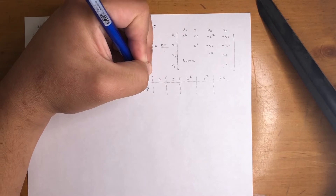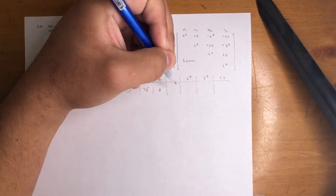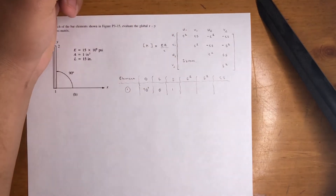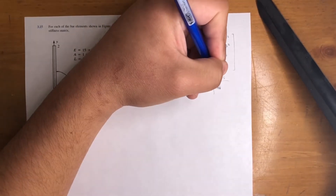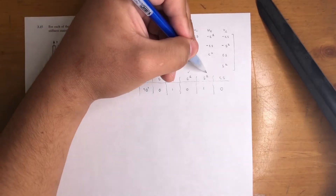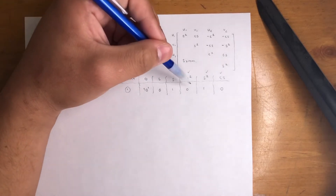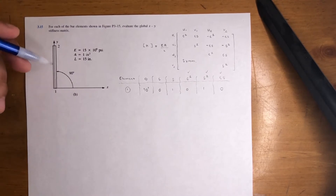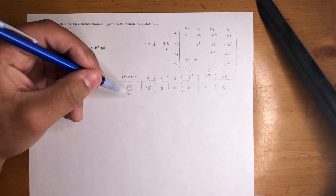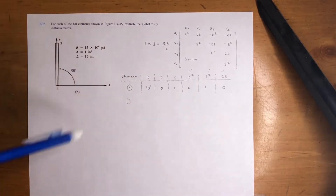In this case we just have one beam, so it's one element, but sometimes you'll have two, three, or four depending on the problem. For element one, the angle is 90 degrees. Cosine of 90 is zero, sine of 90 is one, cosine squared is zero, sine squared is one, and cosine times sine is zero. These three columns — cosine squared, sine squared, and cosine times sine — are what you need to fill out the stiffness matrix.